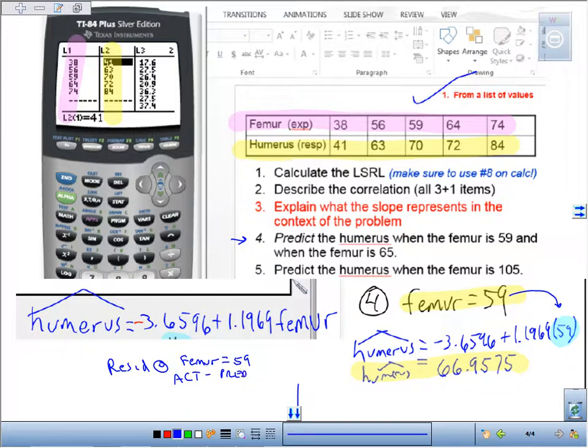In this case, the actual value at 59 was 70. So it'll be 70 minus 66.9575. That equals positive 3.0425.